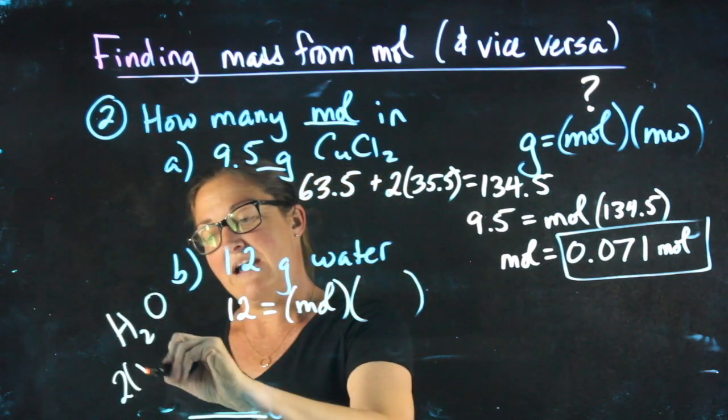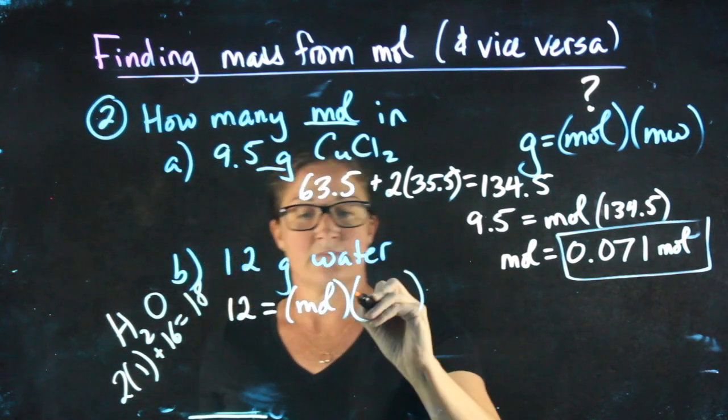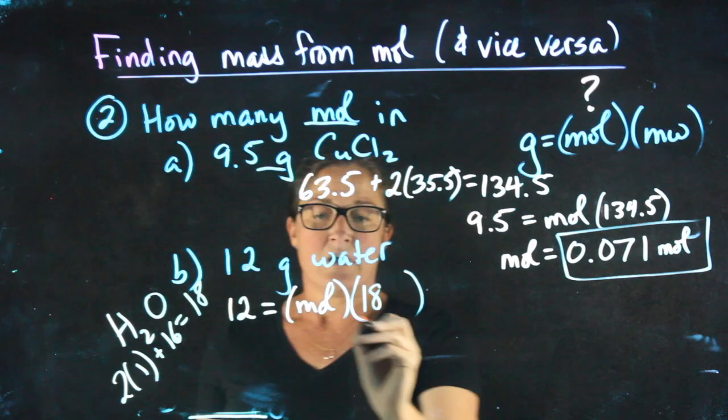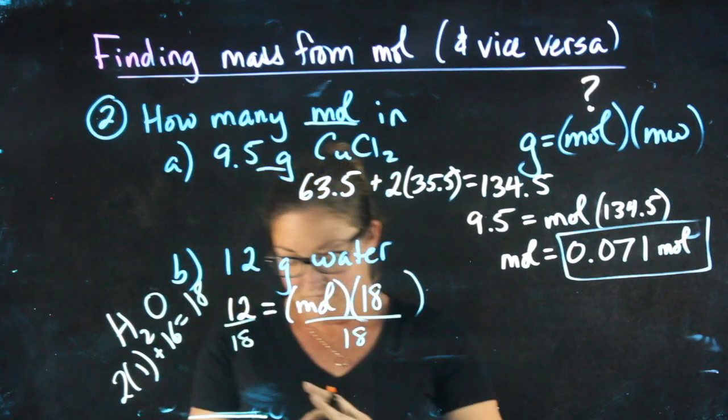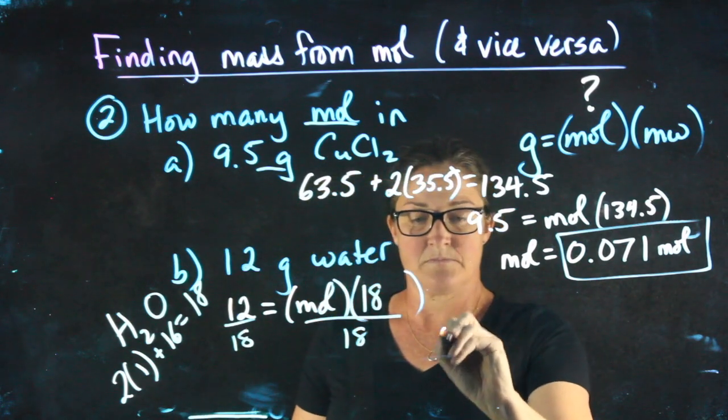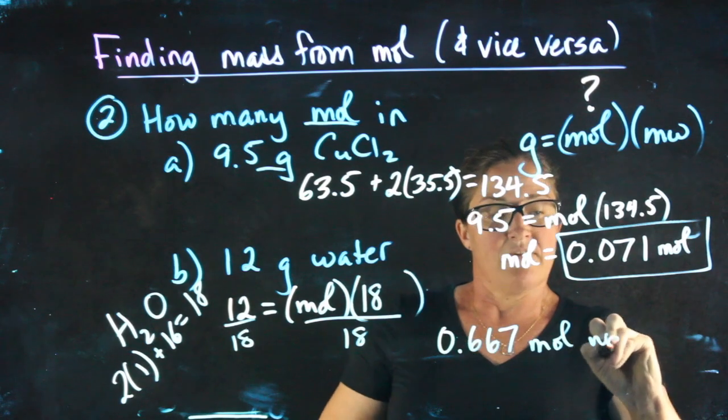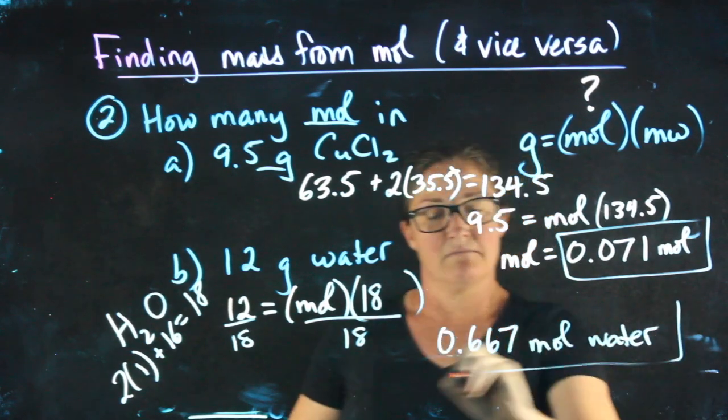Its molecular weight is 2 hydrogens plus 1 oxygen: 18. Dividing both sides by 18, 12 over 18 is 0.667, giving us 0.667 moles of water.